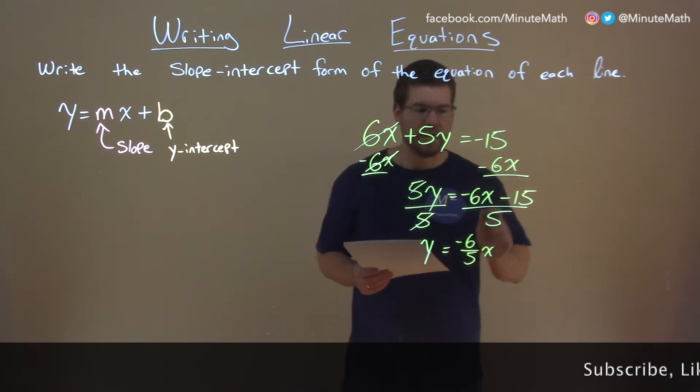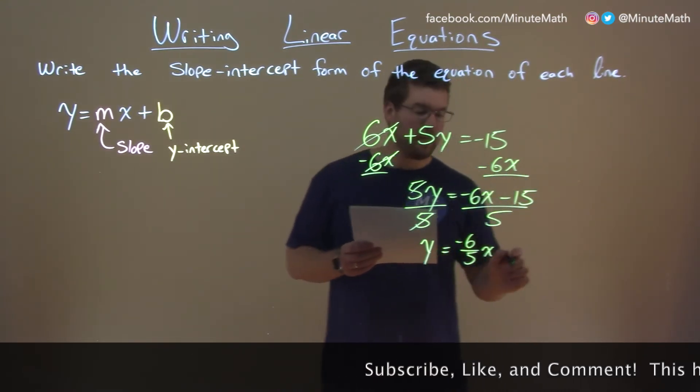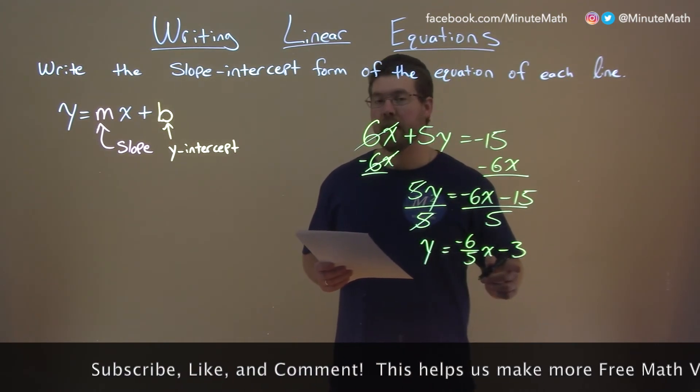Then we have negative 15 divided by 5. Well, negative 15 divided by 5 is a minus 3, or subtract 3 here. And that is our y-intercept, negative 3.